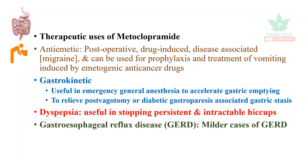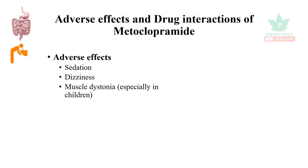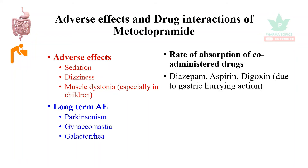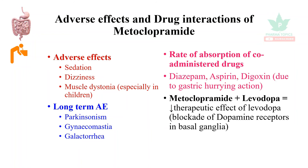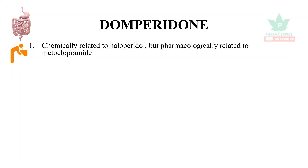Adverse effects of metoclopramide include sedation and muscle dystonia, especially in children. Long-term adverse effects are parkinsonism, gynecomastia, and galactorrhea. The rate of absorption of co-administered drugs such as diazepam, aspirin, and digoxin may be affected since it is a gastric hurrying agent. Metoclopramide combined with levodopa reduces the therapeutic effect of levodopa because it blocks dopamine receptors in the basal ganglia.